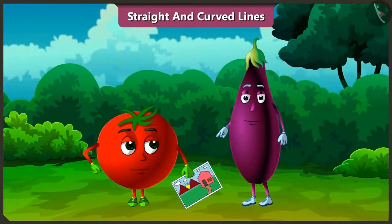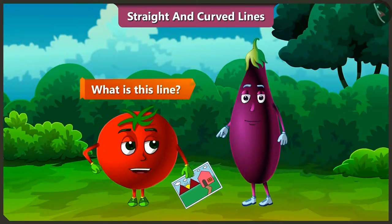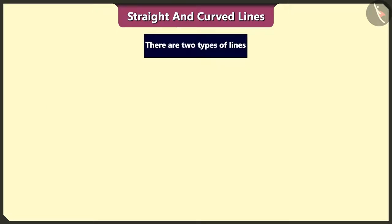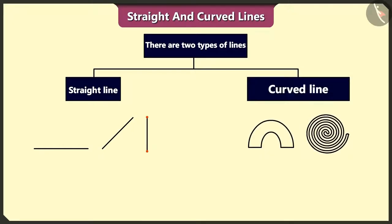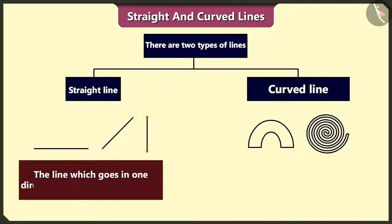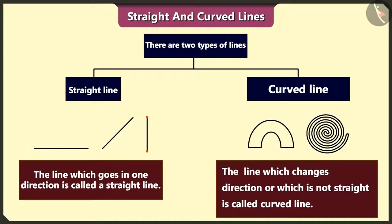But Bingu, what is this line? The sign made from one dot to other dot is called line. There are two types of lines, straight line and curved line. The line which goes in one direction is called a straight line. And the line which changes direction or which is not straight is called curved line.